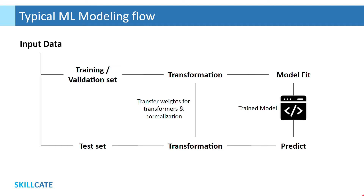While solving a typical ML problem, we have input data that we split up into training, validation, and test. For model fitting, based on the use case, we do a series of transformations. For example, if input data is text data or images, we perform transformations to have numeric representations that a computer can then analyze further. Then model training happens using some estimator.